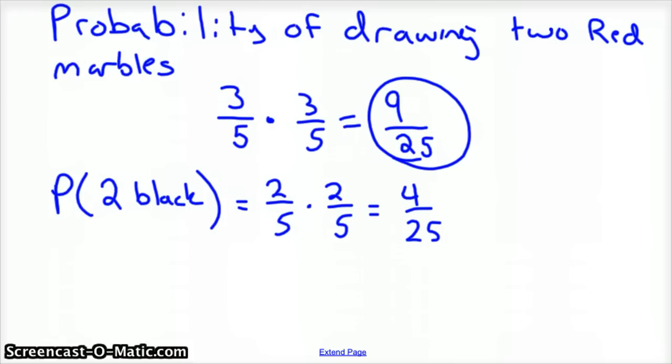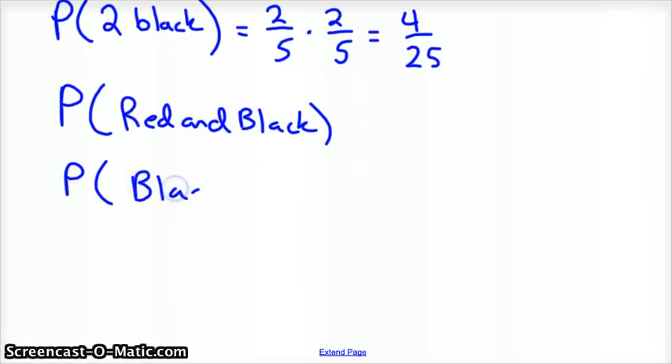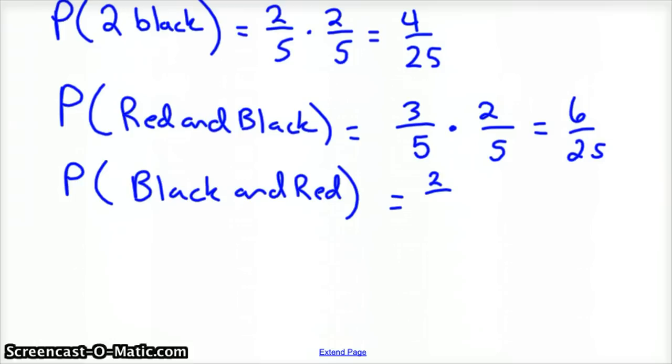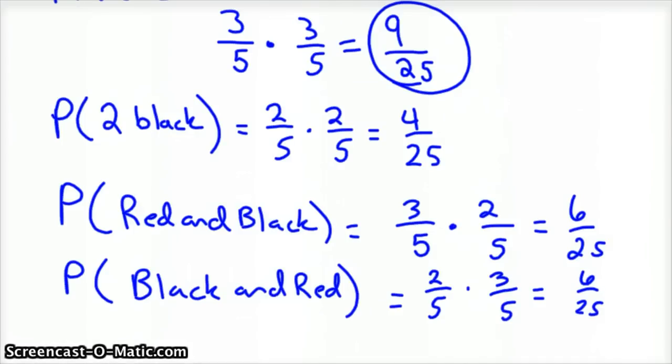So we're getting closer. We've got nine, we've got 13 of them, so we're still missing 12. Well, you could have the probability of a red and black in that order, or the probability of a black and red in that order. The probability of a red and black, the probability of the red you get a red the first time is three out of five, and the probability that you get a black on the first time is two out of five, which would be six out of 25. The probability that you get a black the first time is two out of five, and the probability that you get a red the second time is three out of five, that would be six out of 25. And if you add that up, we found all 100%, all 25 of them.